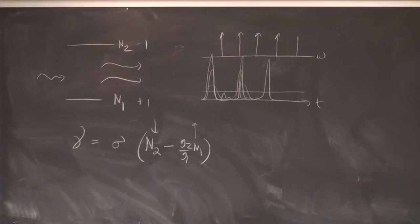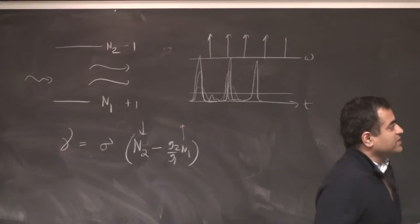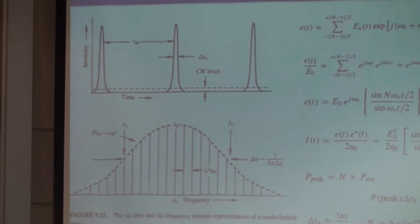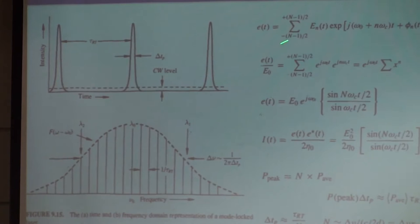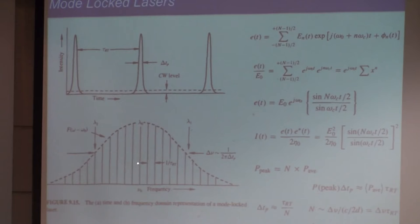The Fourier transform of a delta train is also a delta train in time — a comb function in both domains. The mode-locked laser takes advantage of this mathematical idea. In the last class we modeled this by taking each mode with electric field amplitude Eₙ oscillating at center frequency ω₀, with ω₀ plus an integer times the FSR giving ωc. Each frequency has a certain amplitude, and we added a random phase for each mode.